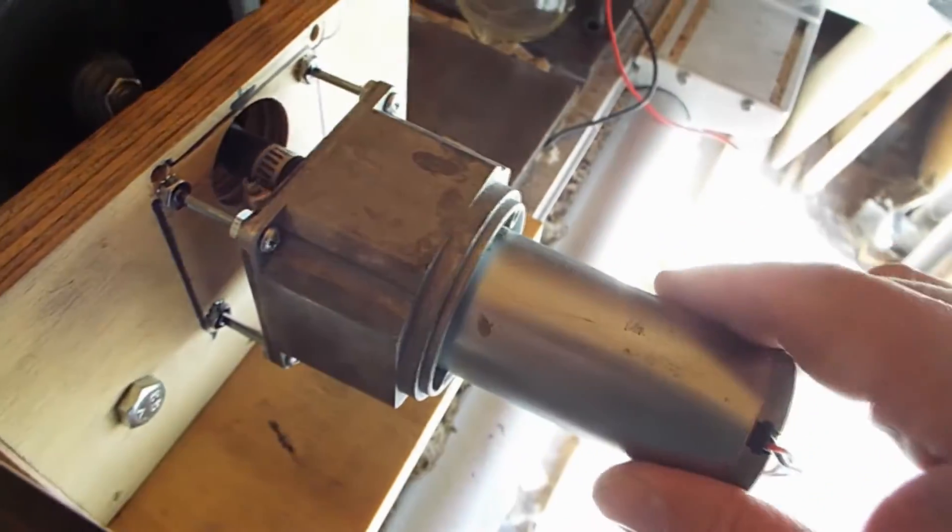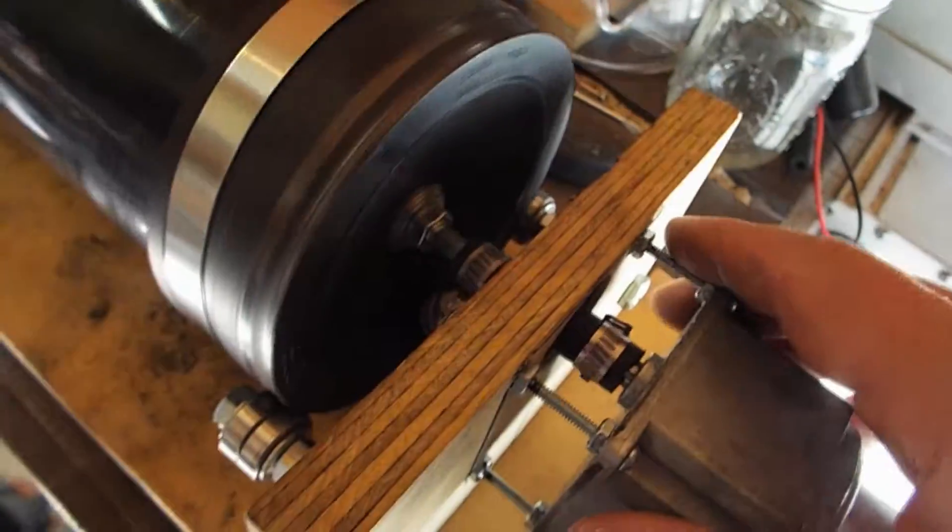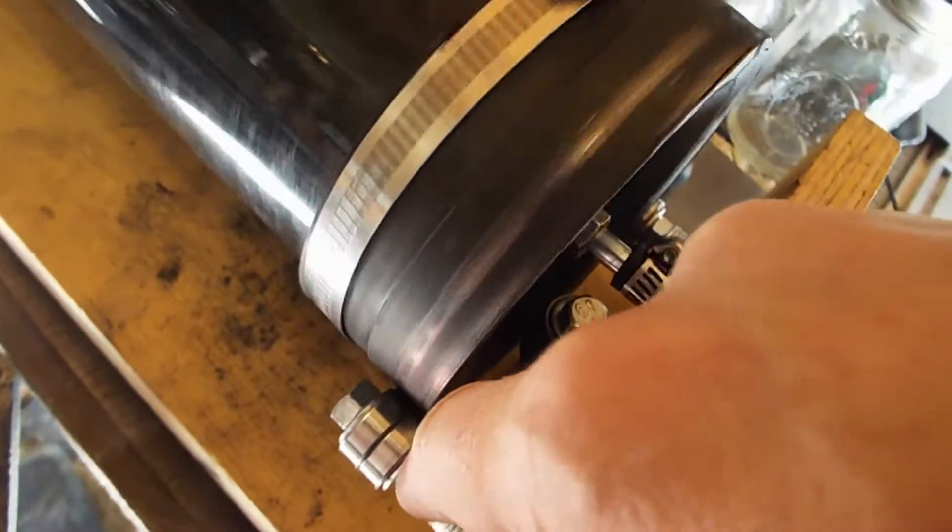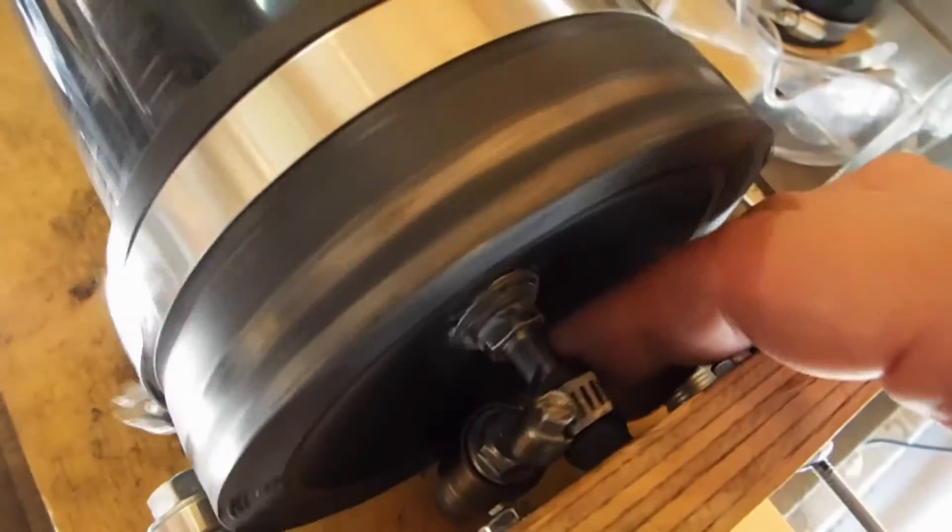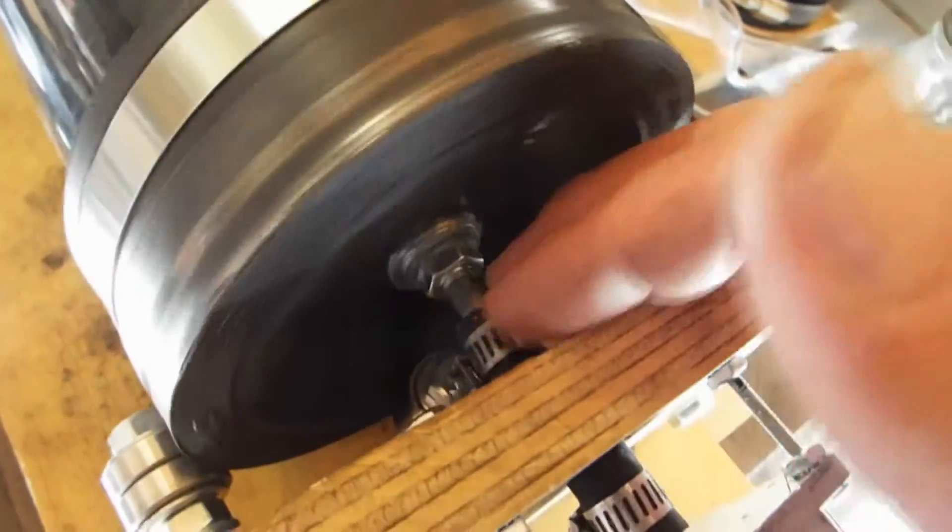I put a faster gearhead motor on here and also had to add two bearings to support the weight of the ball mill on this end and another bearing on the inside here, just to keep it from pulling in if this thing comes closer.